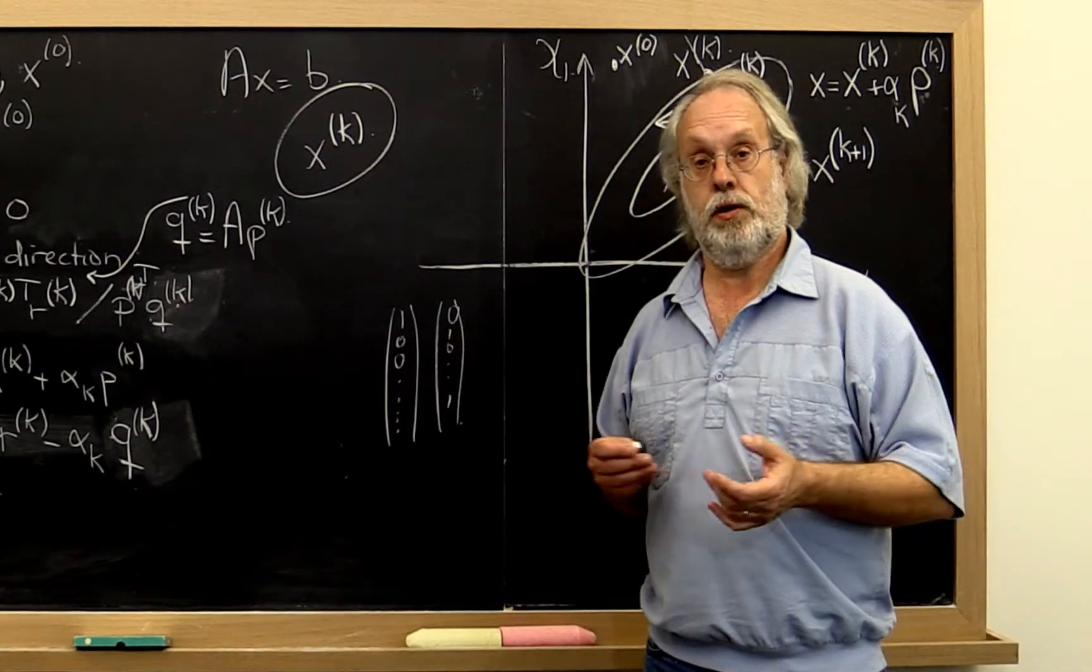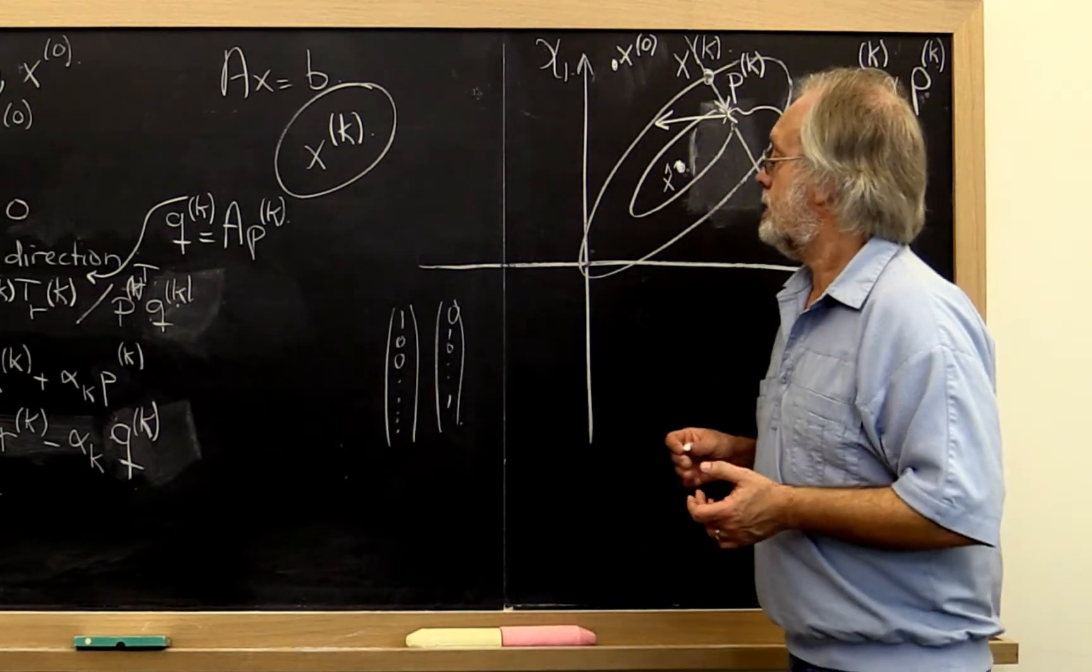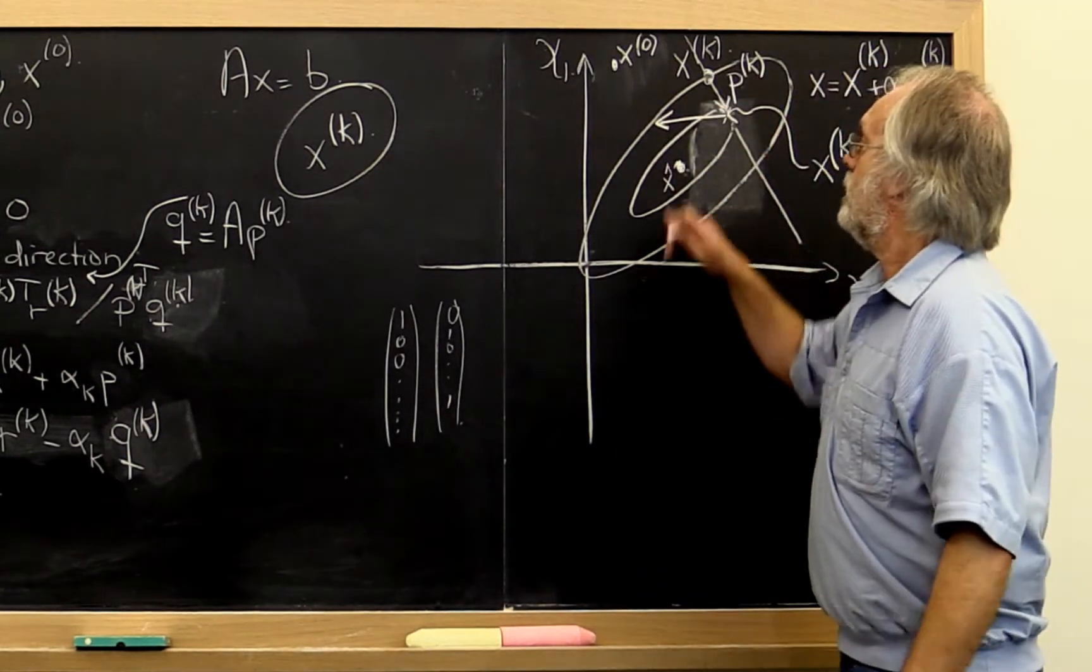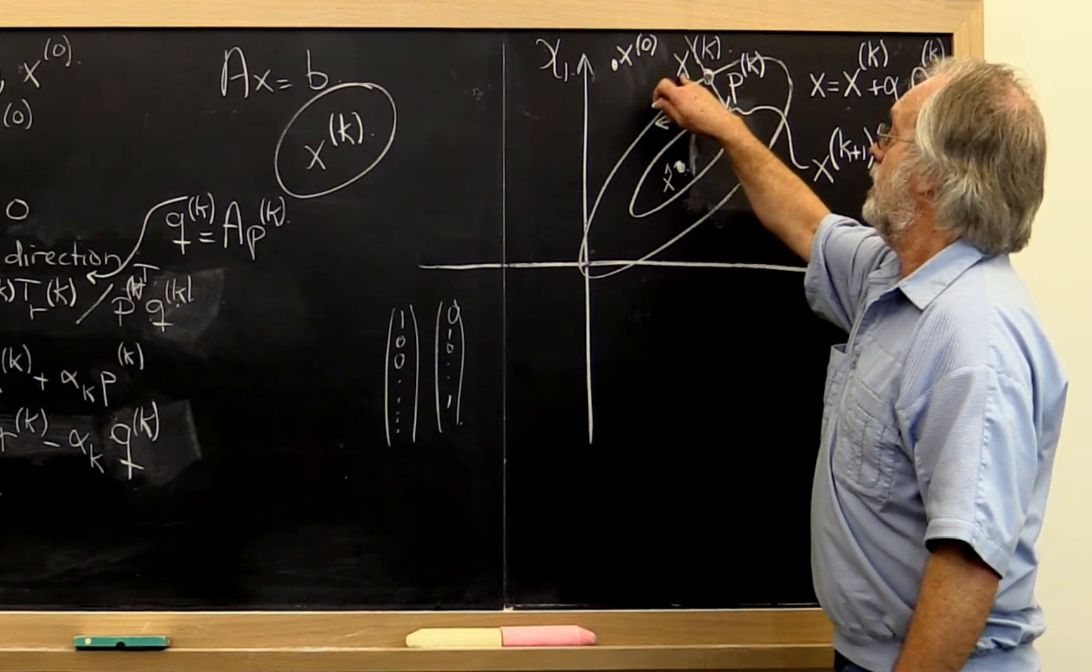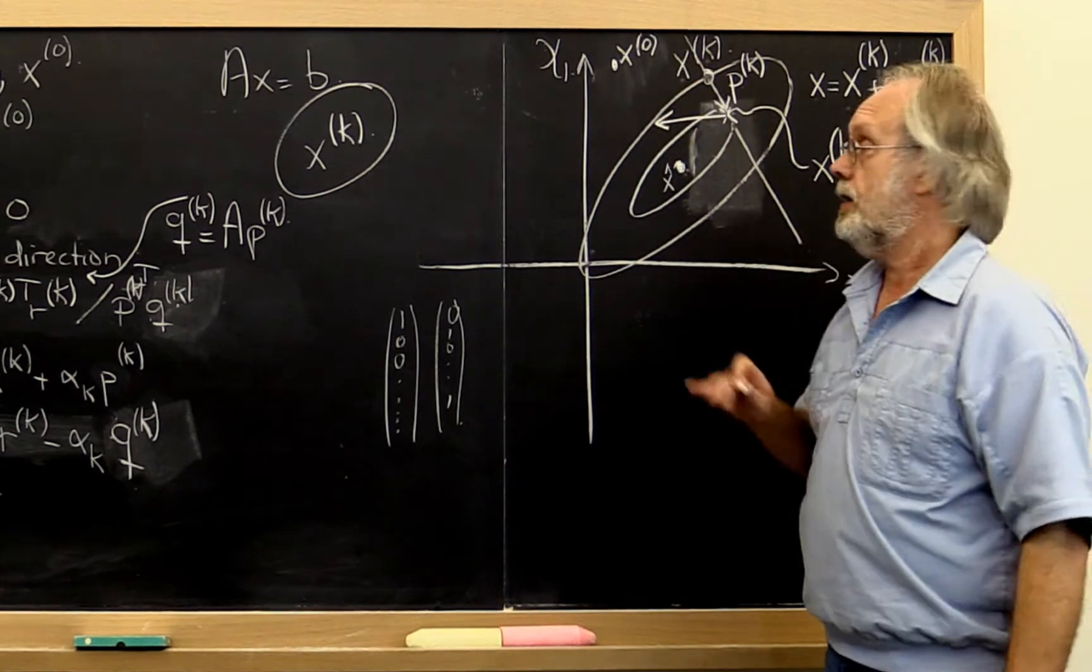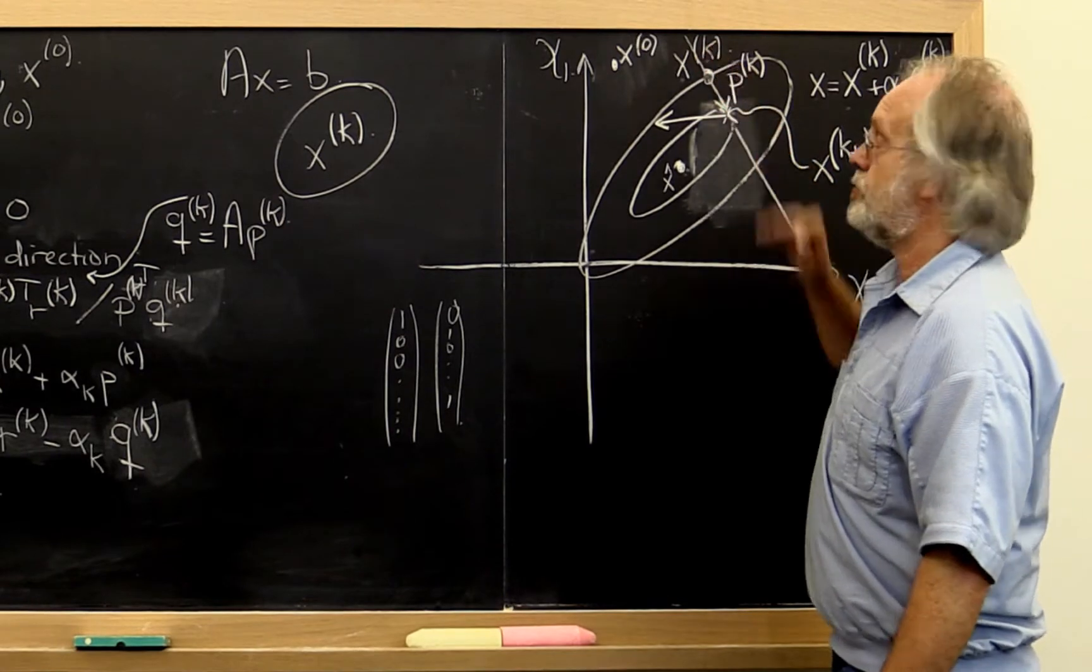To further refine our descent methods, let's go back to this picture. We're at some iteration where we have computed x k, and now we want to find some search direction.